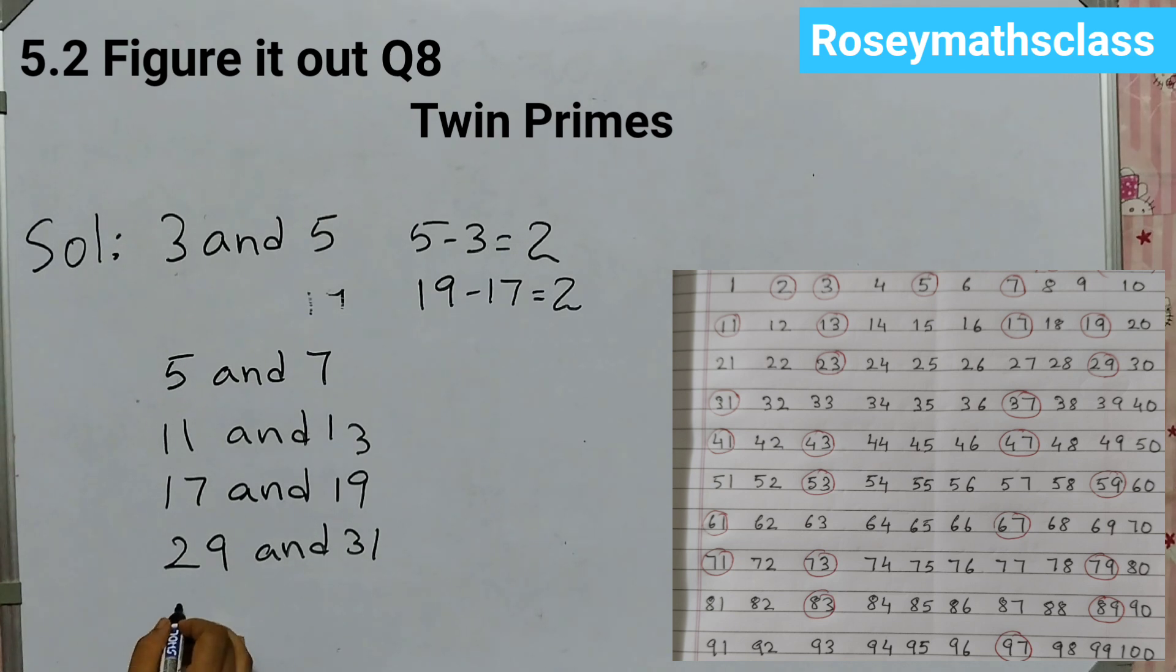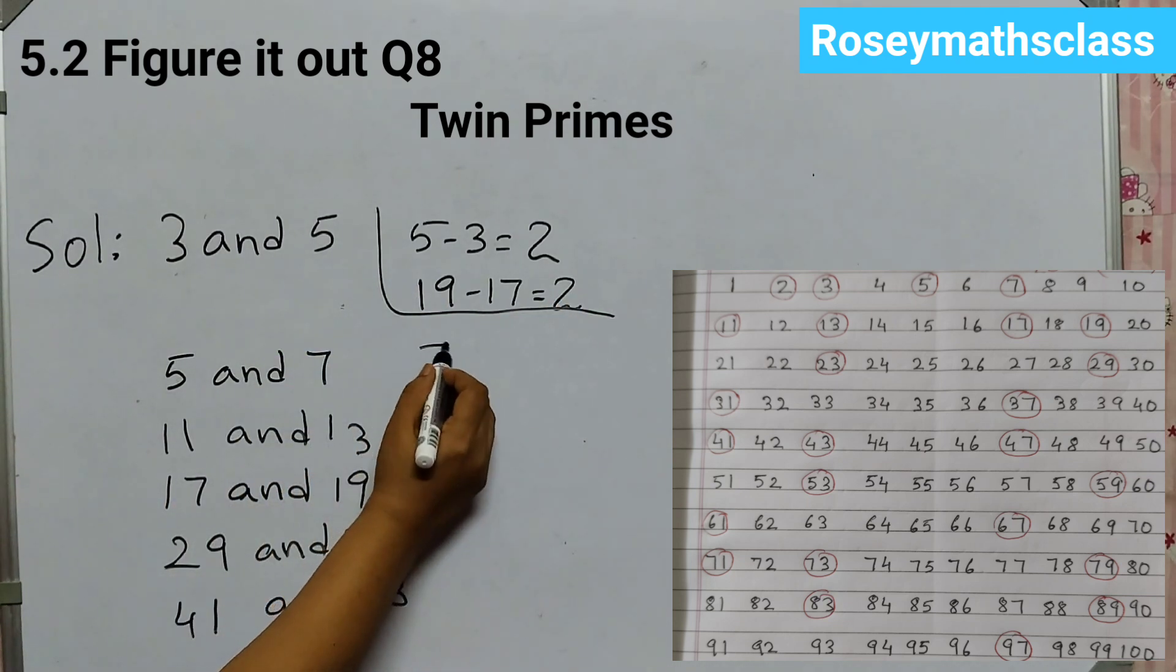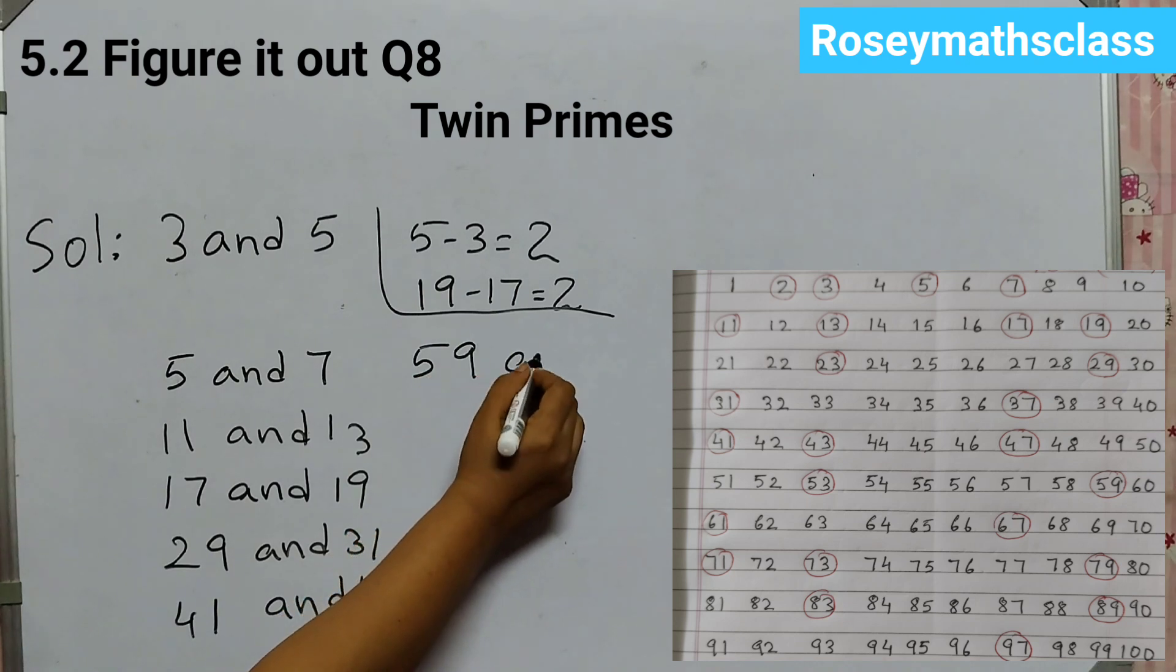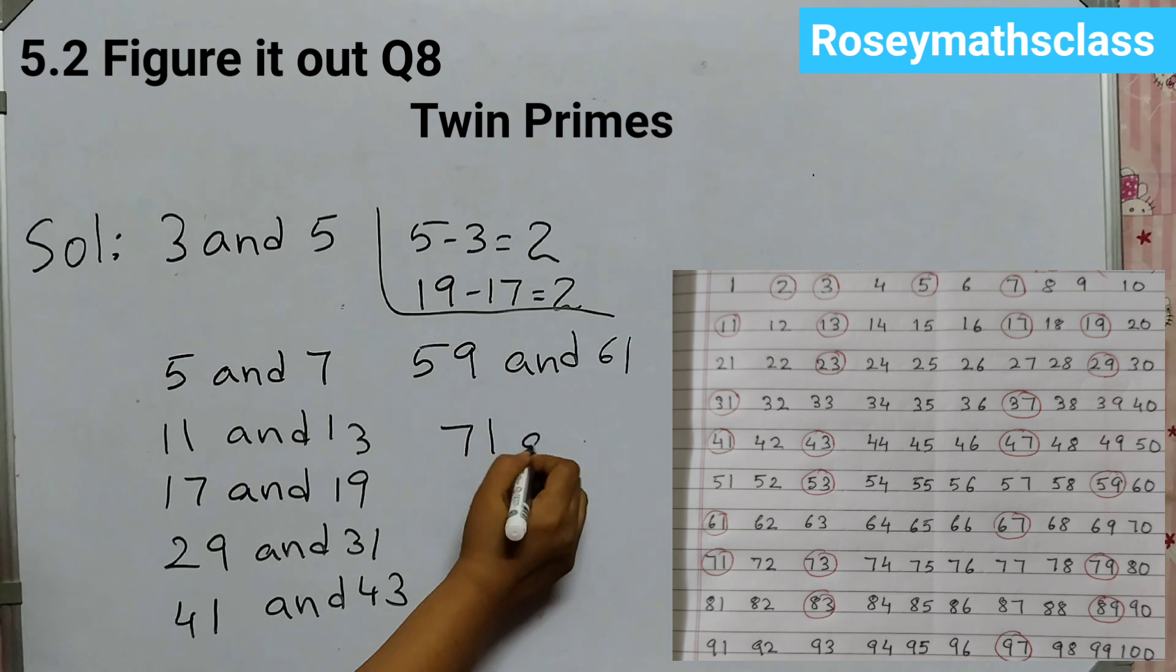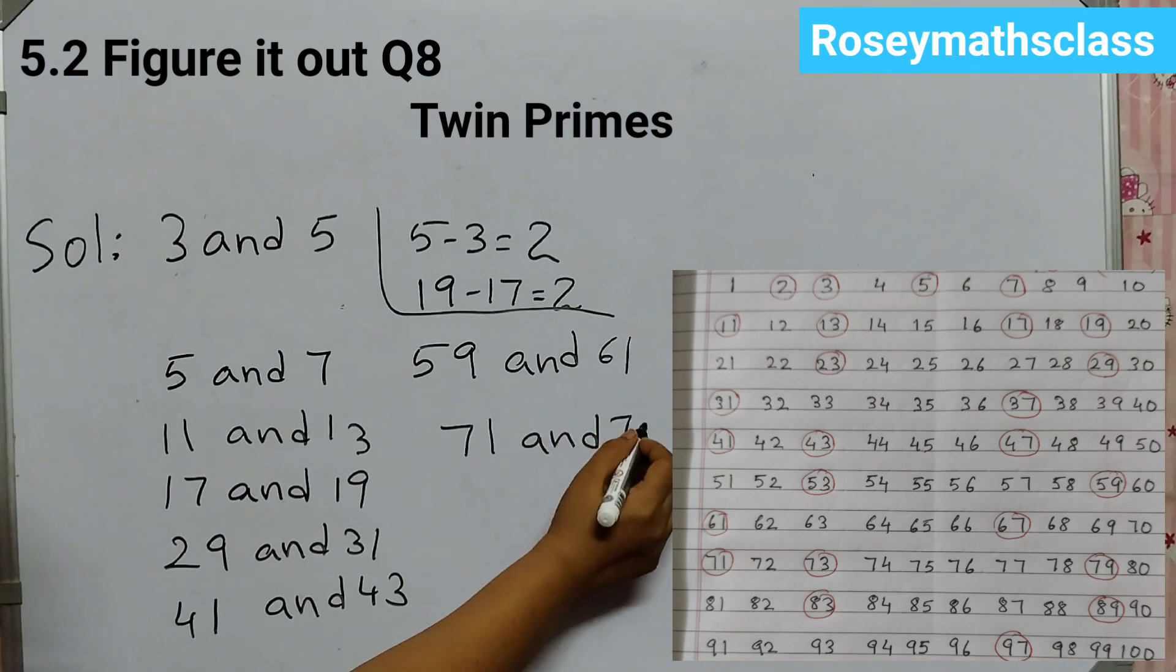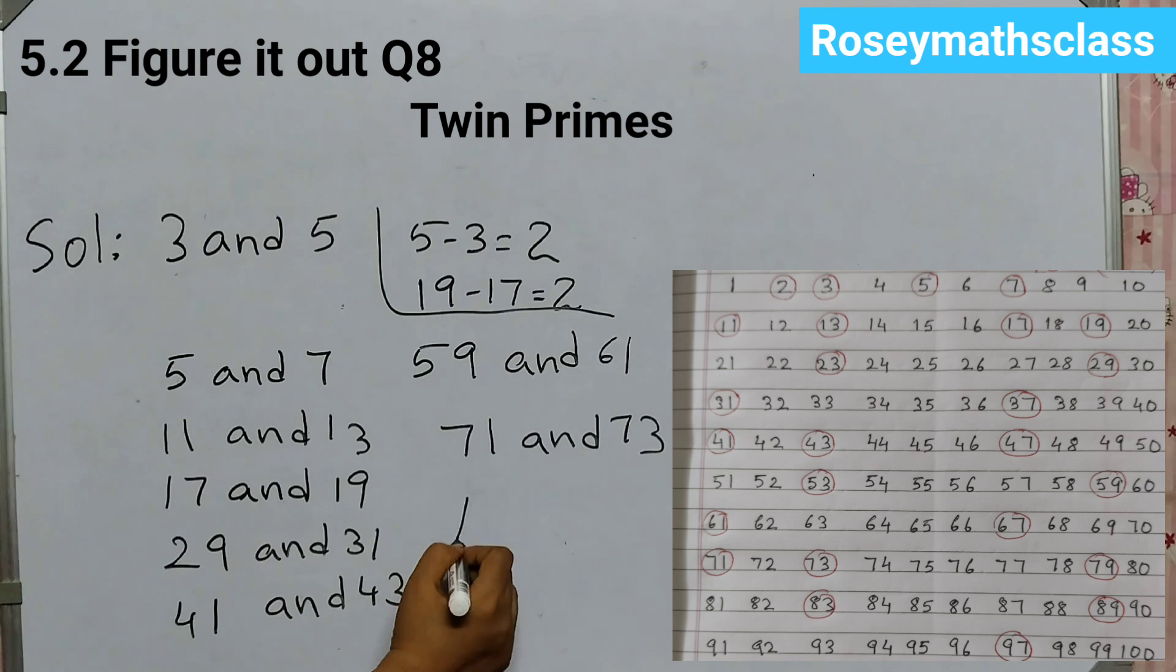41 and 43. Then 59 and 61, and 71 and 73. So these are all twin primes between 1 to 100.